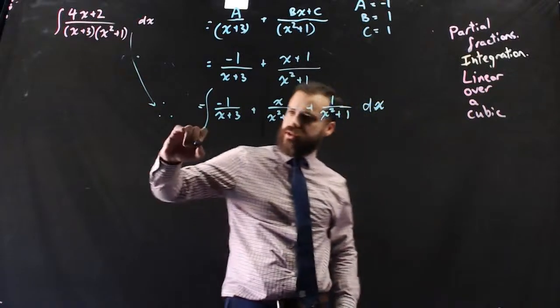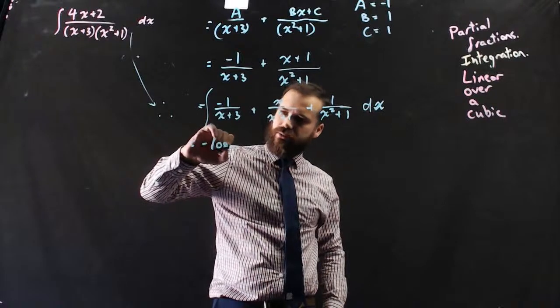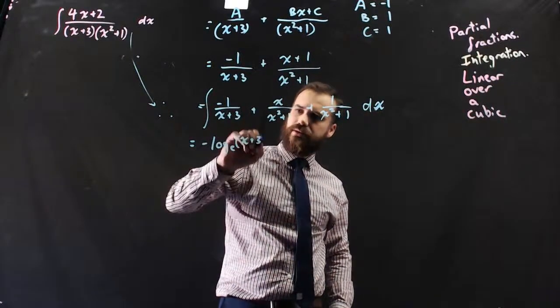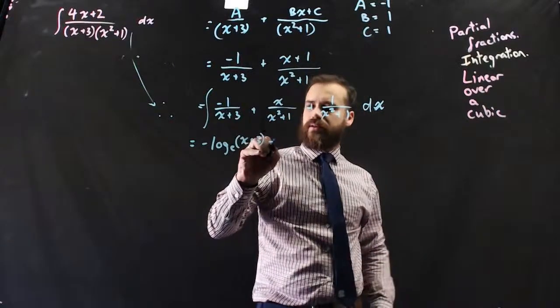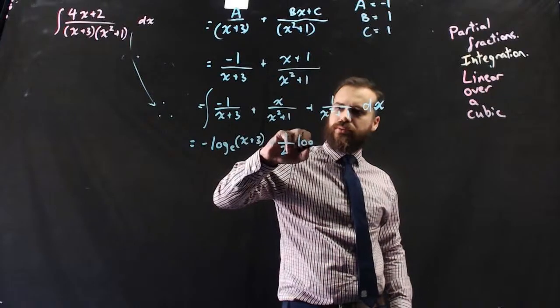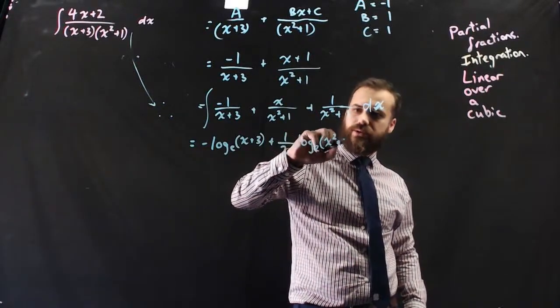So you can pretty much just integrate by rule here. So you've got negative log base e x plus 3. Then 1 half log base e x squared plus 1.